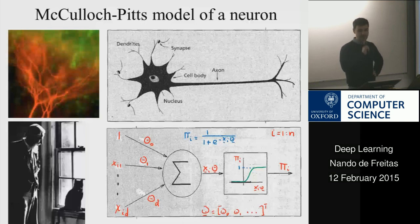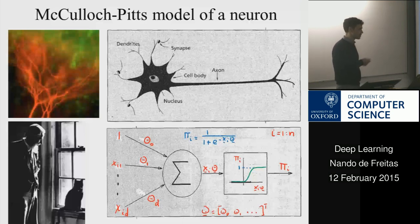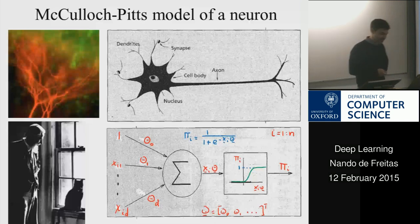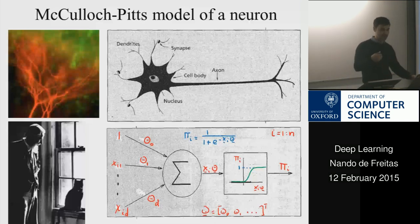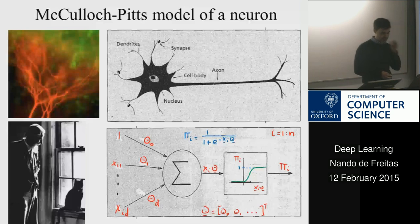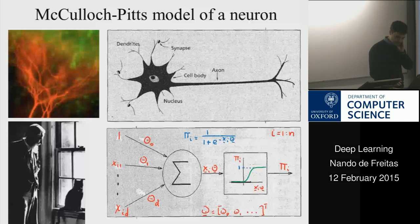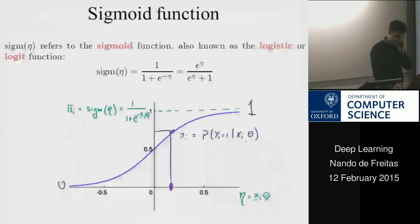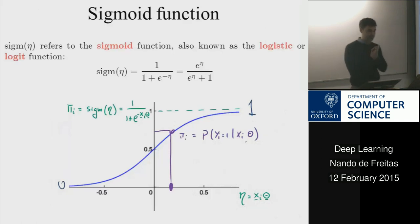And if you have on-off gates, most of you are computer scientists — you can build devices like the computer I'm using to teach this lecture. Let's look at the squashing function first.